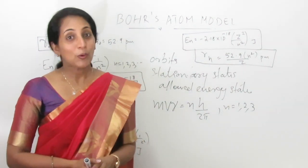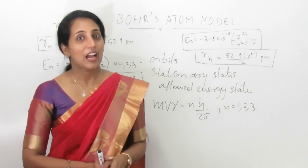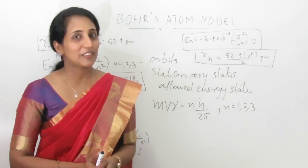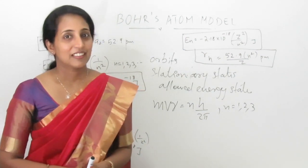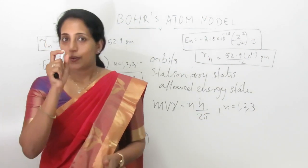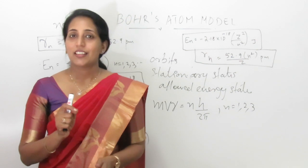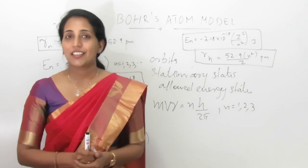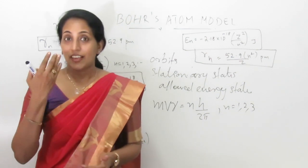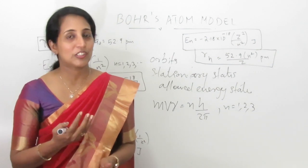Bohr's theory can also be applicable to ions which are isoelectronic with the hydrogen atom — that means one-electron ions. For one-electron ions, Bohr's theory is applicable and we can calculate their different stationary states, energy, and radii.